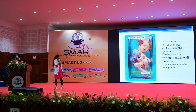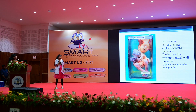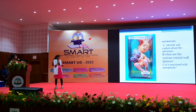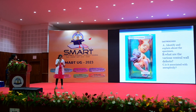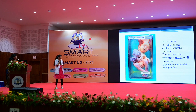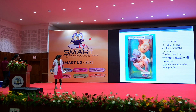This specimen is gastroschisis. It is a full-thickness abdominal wall defect present to the right side of the umbilical cord insertion. The bowel herniates through the defect into the amniotic cavity. This is one of the major anomalies, more common in fetuses of younger mothers — maternal age 18 to 20 years.